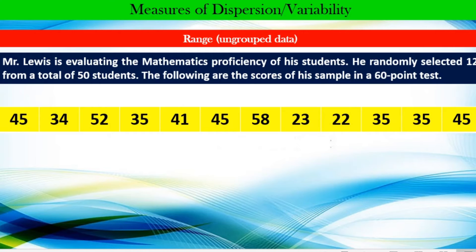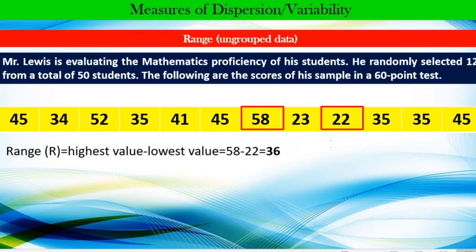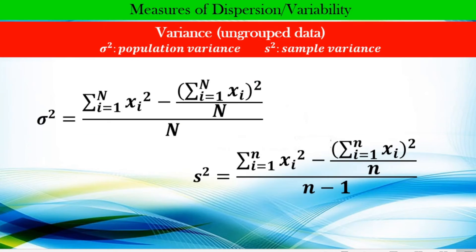There are three measures of dispersion or variability that I will be presenting — these are the most common. The first one is called the range, although the range is not used that often because it is a very rough estimate of variability. Going back to Mr. Lewis evaluating the mathematics proficiency of his students — he randomly selected 12 from a total of 50. To find the range, we simply identify the highest and lowest values and subtract them: 58 minus 22 equals 36.